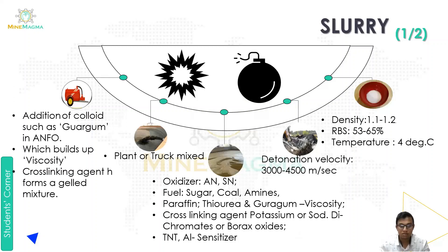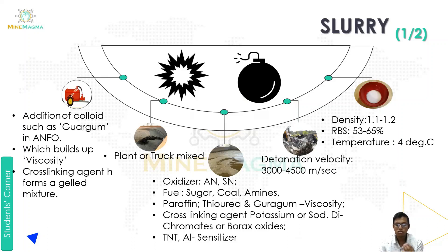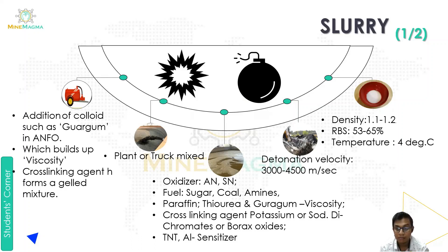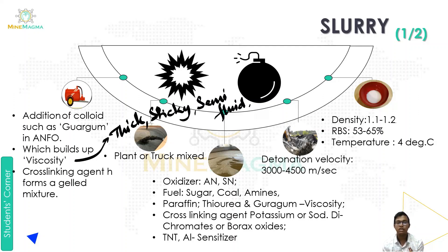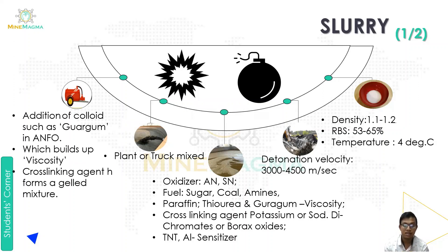Slurry explosive is made by the addition of a colloid such as guar gum into ANFO. A colloid consists of particles that are comparatively larger than normal atoms or molecules, but small enough that they cannot be seen with the naked eye. This colloid builds up the viscosity — a thick, sticky, or semi-fluid texture — and is cross-linked with an agent to form a gel mixture, which we call slurry.